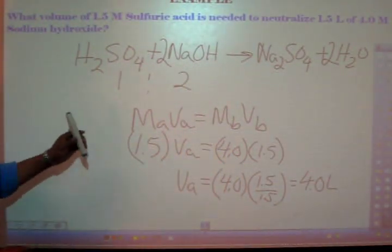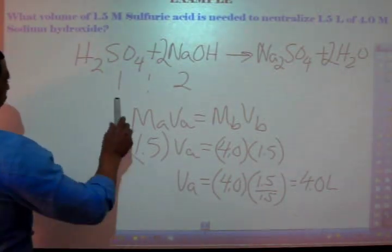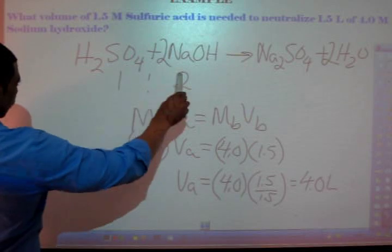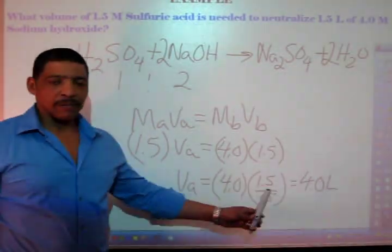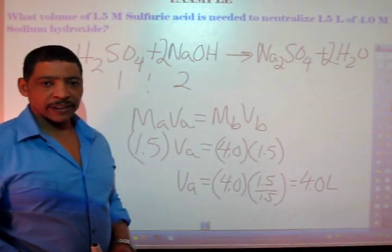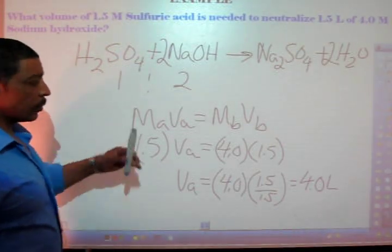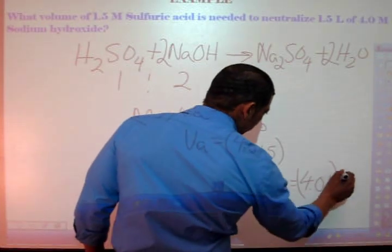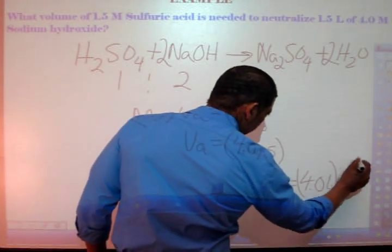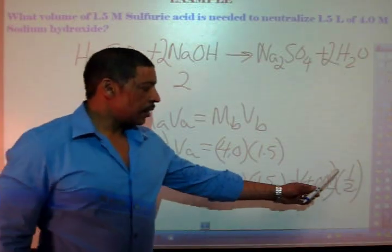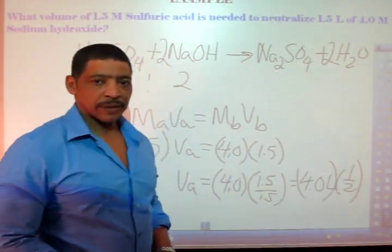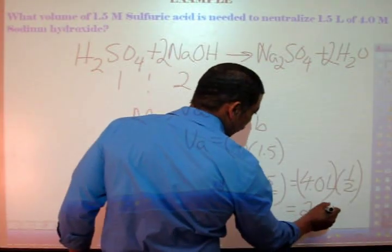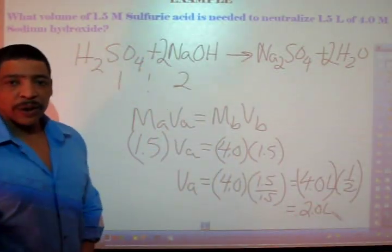The balance equation tells us that the ratio of acid to base is 1 to 2. Therefore, this answer must now be multiplied by a fraction reflecting the molar ratio. We simply multiply 4.0 liters times 1 over 2, which reflects the ratio of acid to base. And our answer is 2.0 liters.